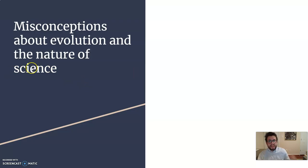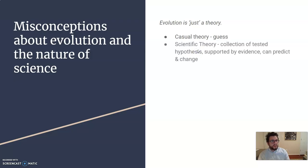Misconceptions about the nature of science. Evolution is just a theory. Well, in casual conversation, a theory would be like a guess. And that's an okay use in casual conversation. But for scientific theory, it is a collection of many hypotheses. And they're going to be supported by evidence and they can predict and change with the evidence.